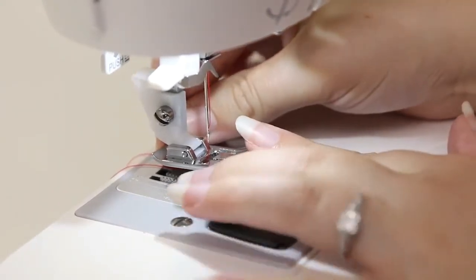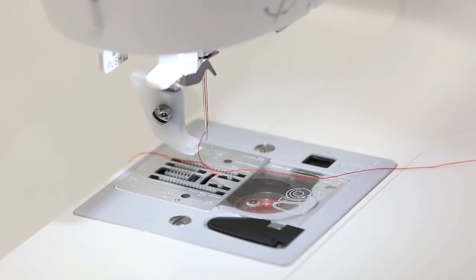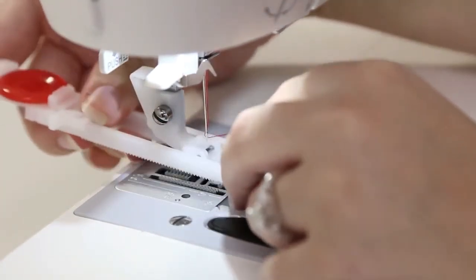Now I just need to select my stitch and sew it out. I'm going to remove my all-purpose foot and snap on my one-step buttonhole foot.